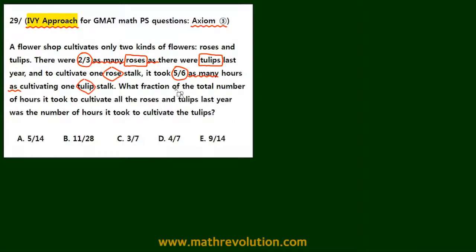Also, the next thing to look at is 'what fraction of the total number', and 'was' or 'is', and 'cultivate the tulips'. So remember these key words of the question.